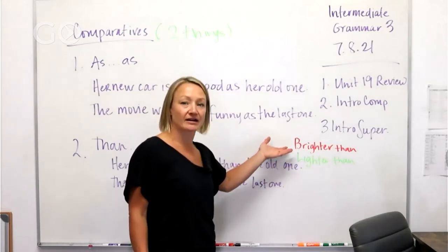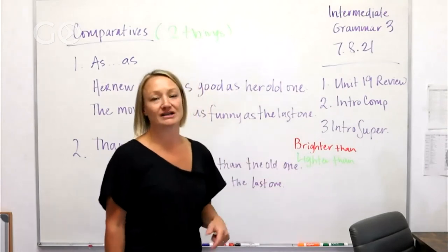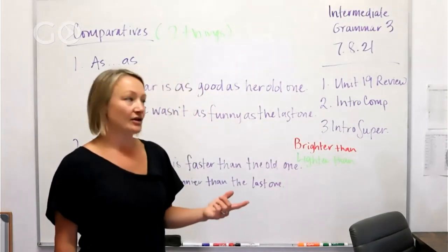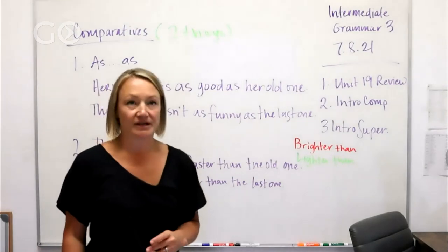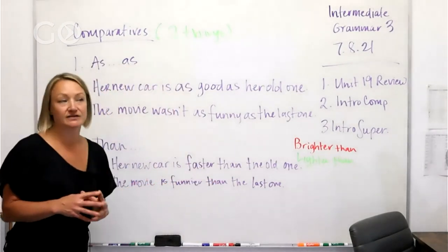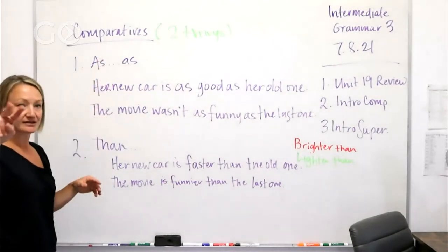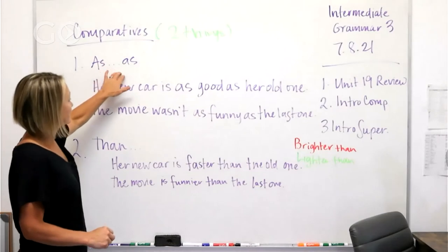The red marker is brighter than the green one and the green marker is lighter than the red one. So there are two ways to use comparatives. We can say, again we're comparing two things, as dot dot dot as.